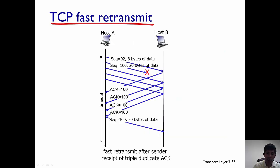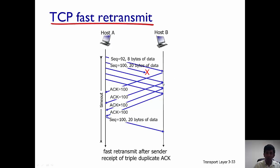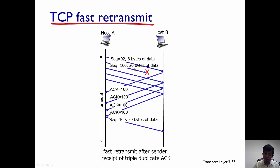Let's look at an example. Host A wants to communicate with host B. It sends the first segment with sequence number 92 and 8 bytes of data, which is received at B. B sends an acknowledgement of 100. The second segment from A — sequence number 100 with 20 bytes of data — gets lost, but the three subsequent segments reach B. Because B has not received the segment with sequence number 100, it keeps sending back acknowledgements indicating it is waiting for acknowledgement 100, even though it has received the subsequent segments. When A receives these three back-to-back duplicate acknowledgements, it realizes that particular segment has gotten lost.